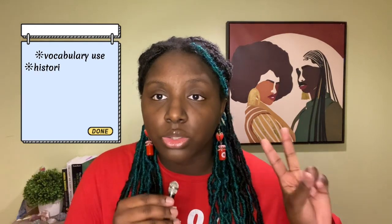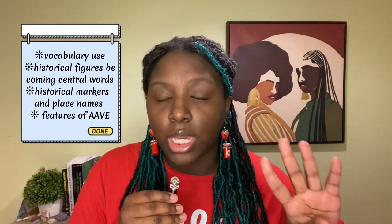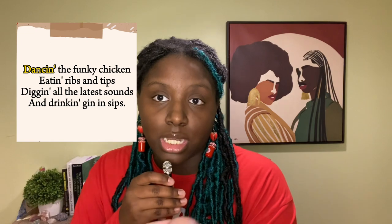I'm going to specifically talk about Black poetry and how it corresponds with AAVE — through vocabulary use, historical figures becoming central words in Black poetry, historical markers and place names, and use of AAVE features. A poet who utilizes these is Maya Angelou. In one of her poems called "Ain't That Bad," she uses an AAVE feature throughout the first stanza, where most words are shifted from "-ing" to "-in'." For example, "dancing" becomes "dancin'." It's a phonological feature, and she writes it with an apostrophe to show the abrupt ending.